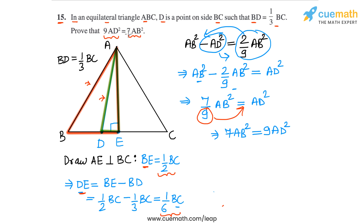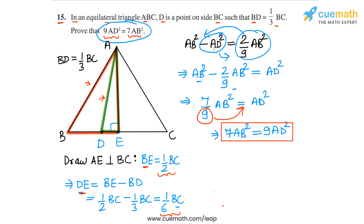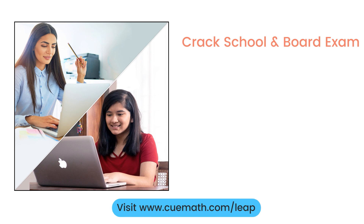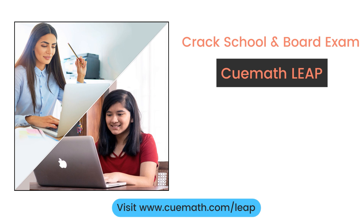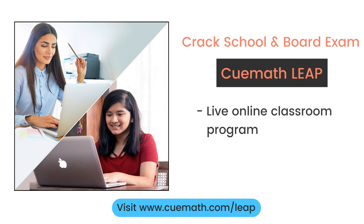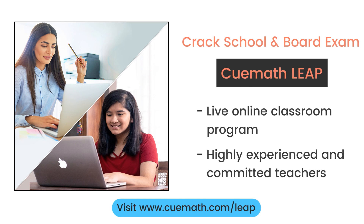Looking at the problem statement, this is exactly what we had to prove — 9·AD² equals 7·AB². This completes our proof. To learn more about how QMath can help you crack school and board exams, explore QMath Leap, a live online classroom program run by highly experienced and committed teachers.